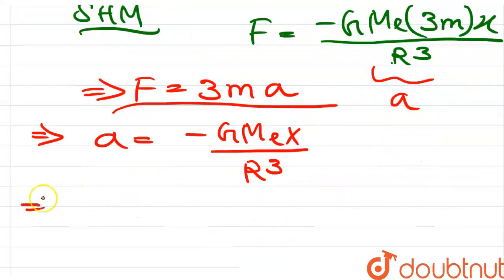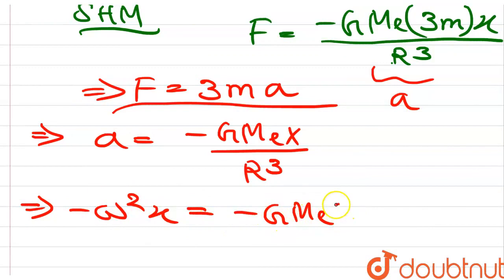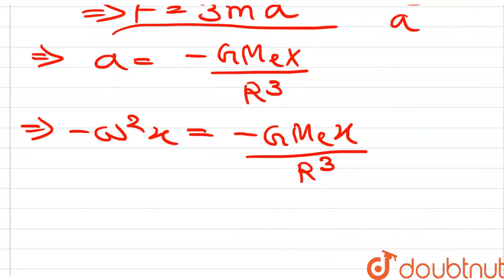So we have minus omega squared x. This acceleration is equal to minus GMₑ into distance divided by R cube.